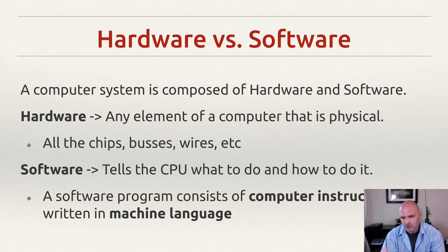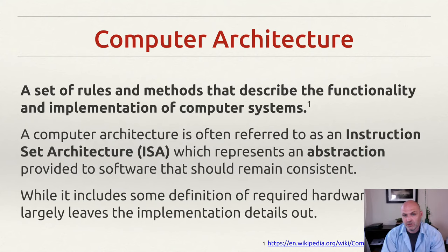The software program consists of computer instructions written in a machine language. This machine language is very important because, as we're going to see, it will vary by the architecture of the machine we're using. So this brings us full circle.